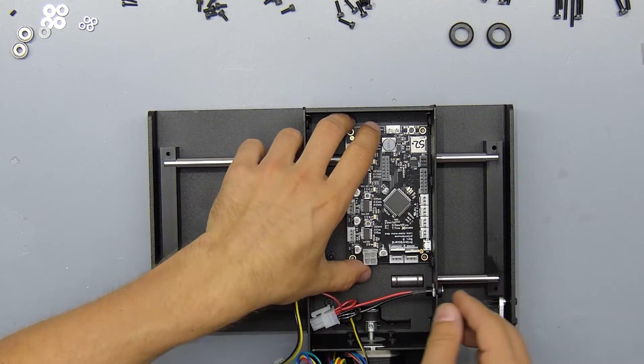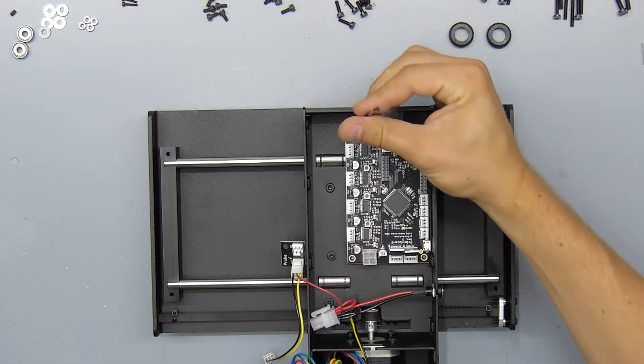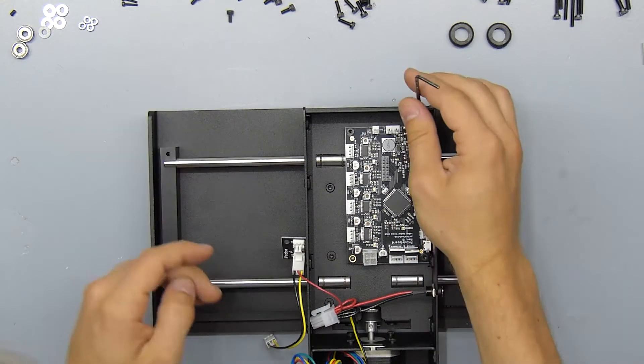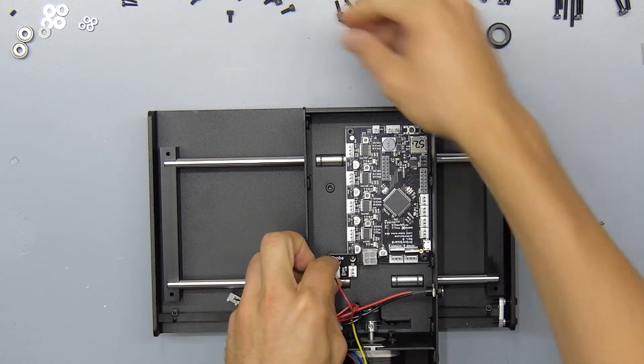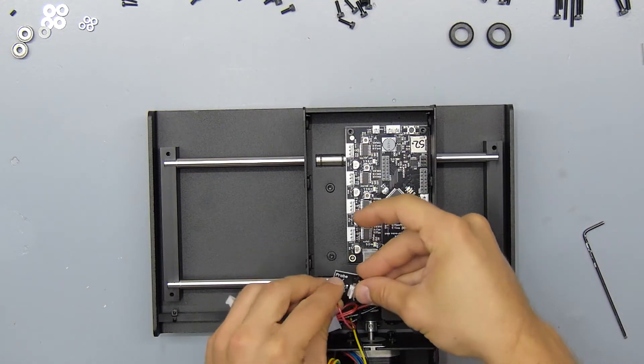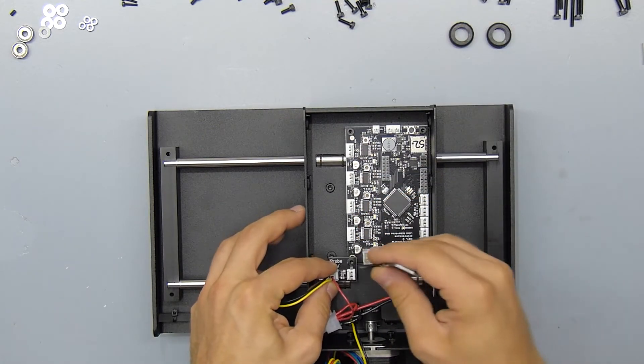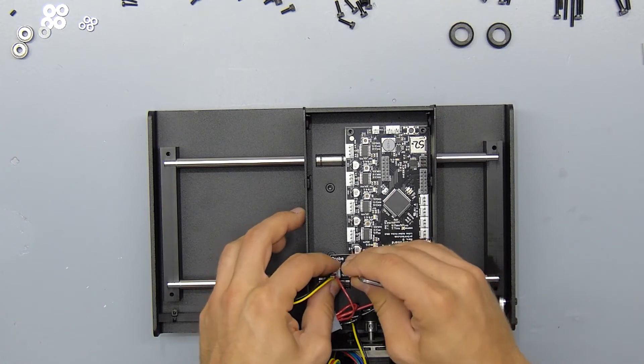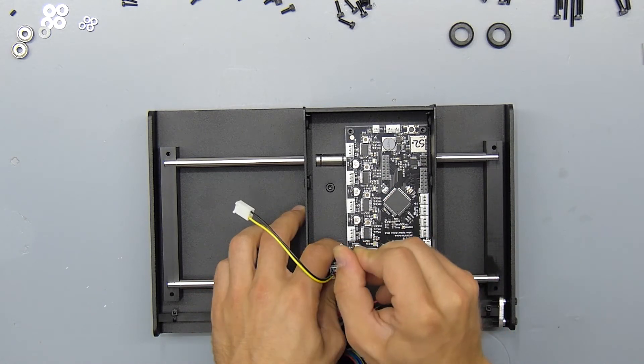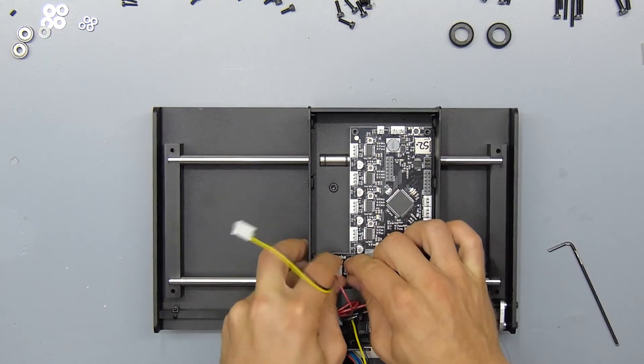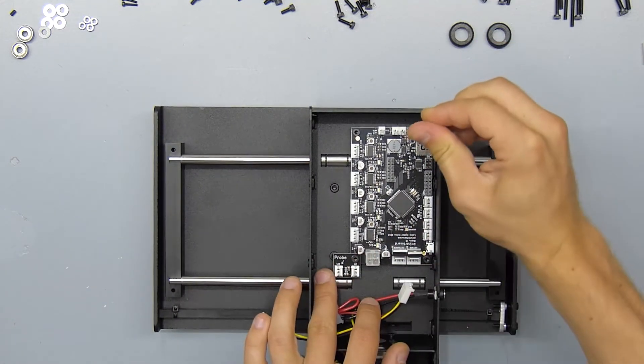You can then tighten down the board with 6mm M3 screws on three corners, and on the fourth corner you're going to use that same screw to install the probe adapter board on top of the main board. In my case, the cable for the probe adapter was installed incorrectly, so I removed it, but we're going to do the wiring later.